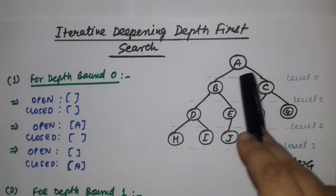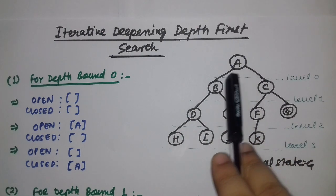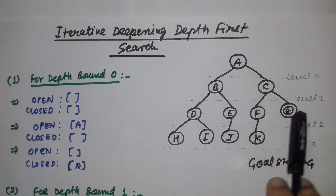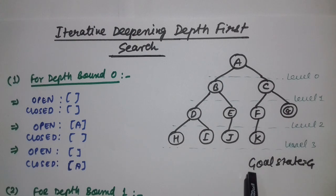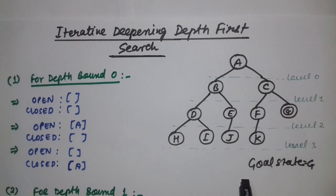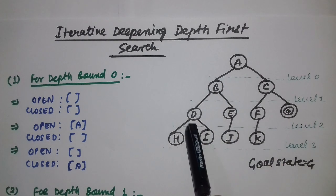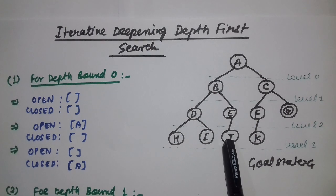Here are a few nodes given. It is a tree: A, B, C, D, E, F, G, H, I, J, K. These are the nodes and we can also call them vertices. I have already discussed this terminology in the previous videos, so I recommend you to please watch them.